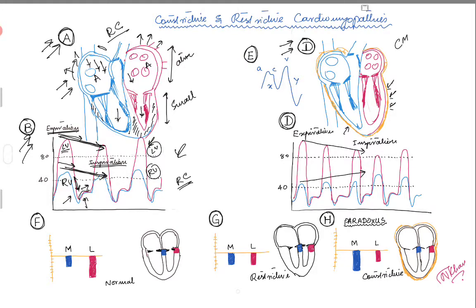If you remember the cardiac cycle — going back to picture A — the atria are being filled with blood, and there is high pressure in both the right and left atrium. These atria are under so much pressure that they are just waiting for the atrioventricular valves to open. As soon as the valves open, they dump the blood rapidly into the ventricle.